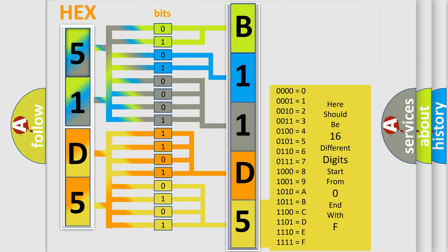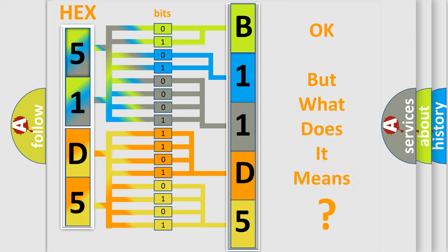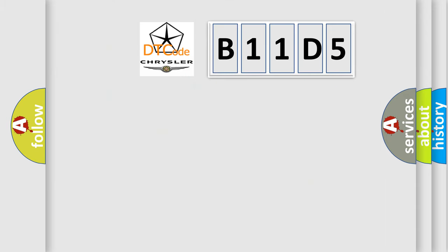We now know in what way the diagnostic tool translates the received information into a more comprehensible format. The number itself does not make sense to us if we cannot assign information about what it actually expresses. So, what does the diagnostic trouble code B11D5 interpret specifically for Chrysler car manufacturers?